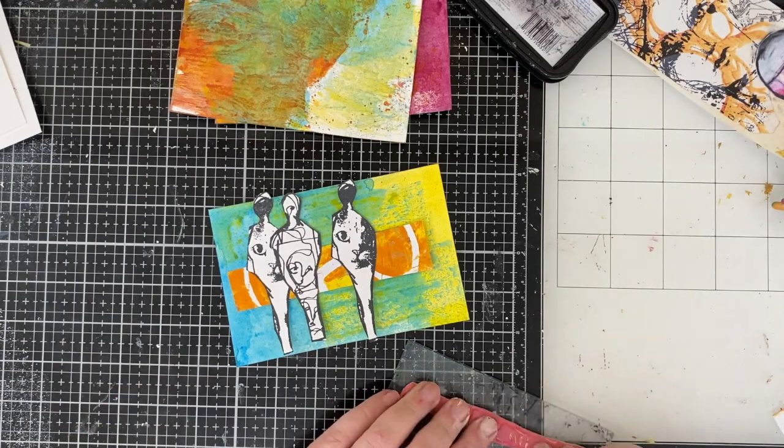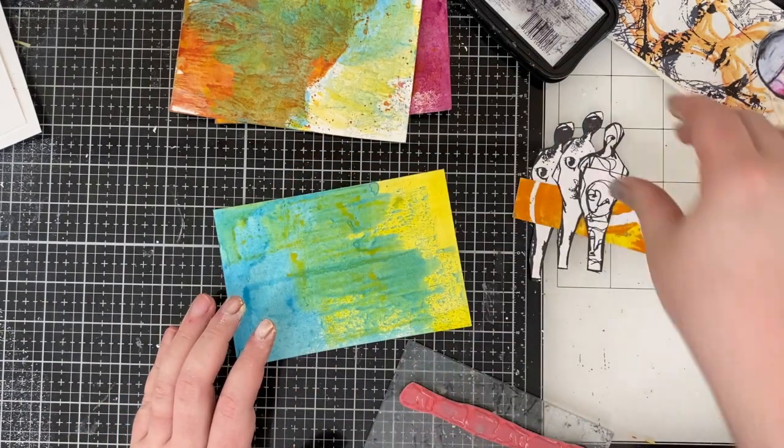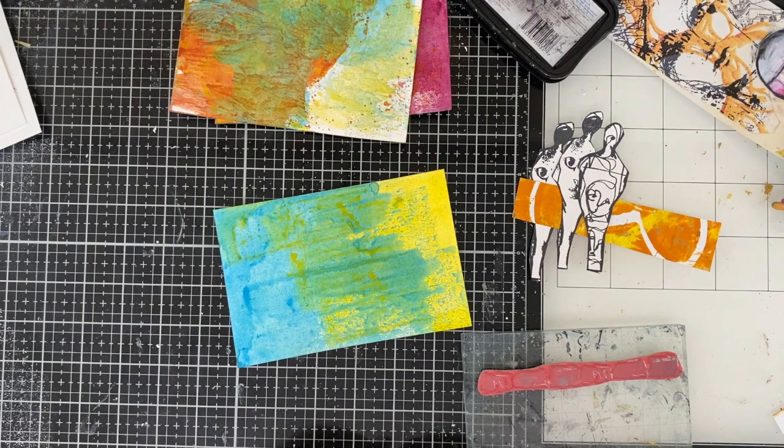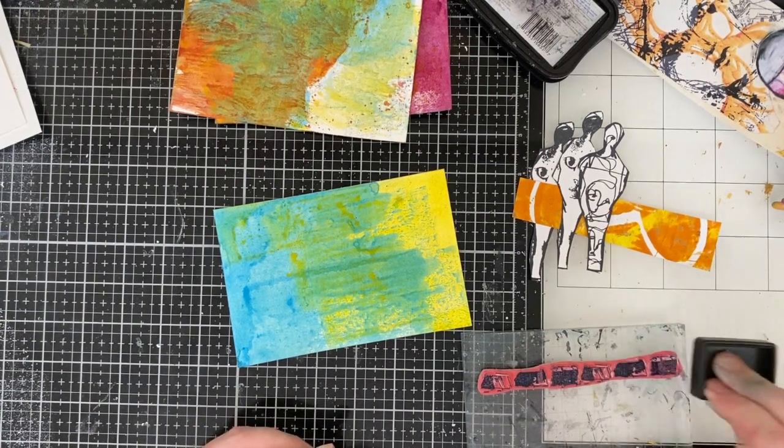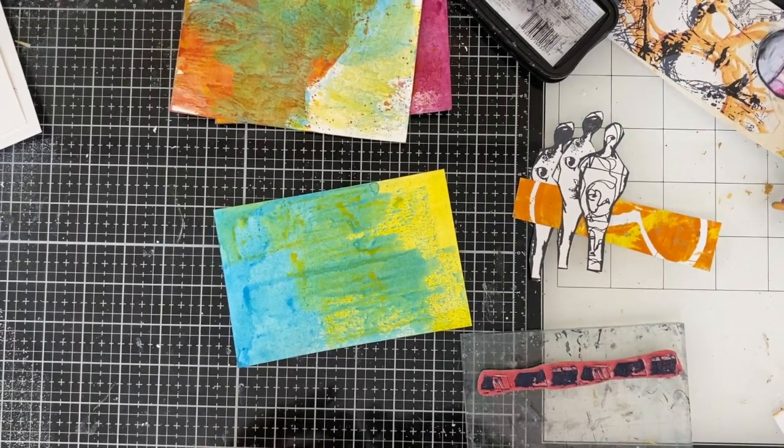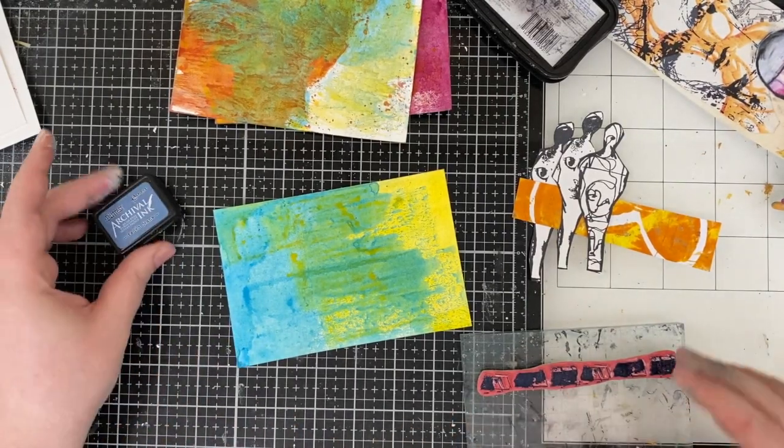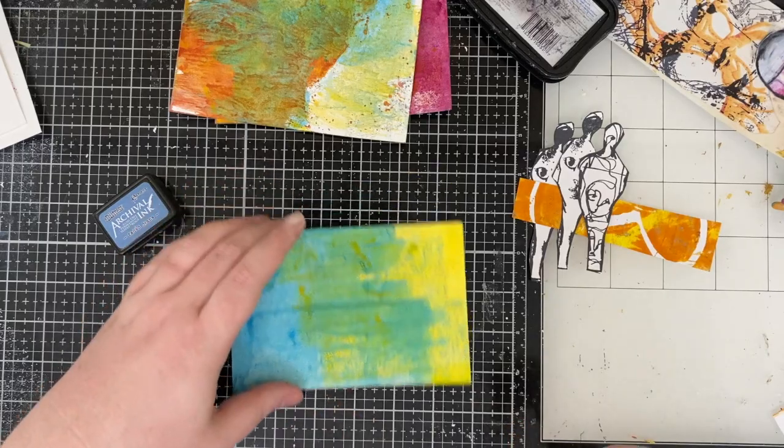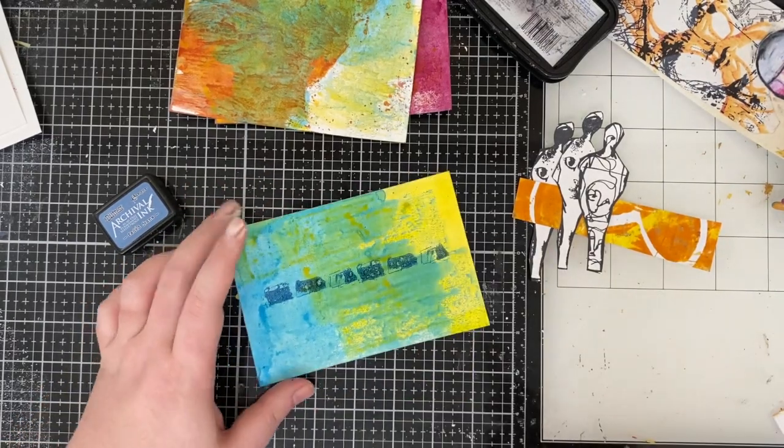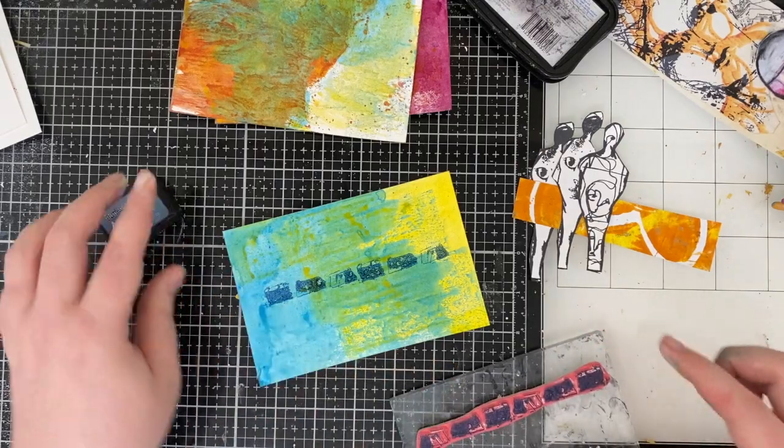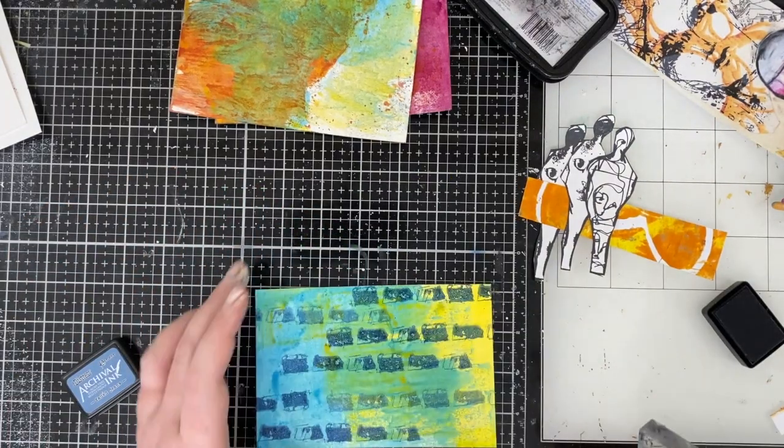So I'm going to use a stamp from one of the Dina Wakeley stamp sets. Check the description box below for a list of the full supplies. I didn't want to commit to it though because I wasn't sure exactly how I would like it so I stamped right in the middle where I was going to cover it up anyway even if I didn't like it and I really really liked it obviously so I decided to go ahead and just cover the whole thing.